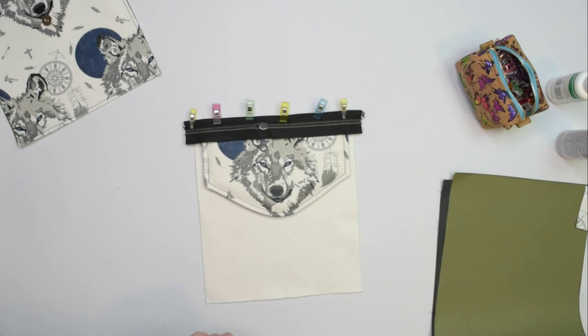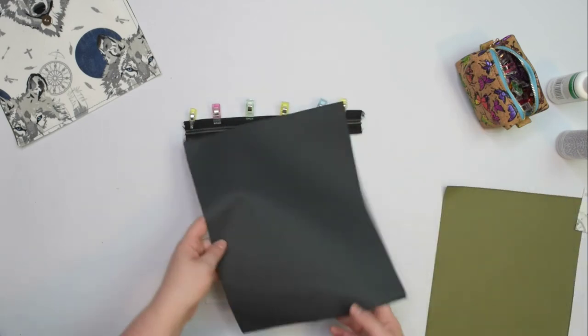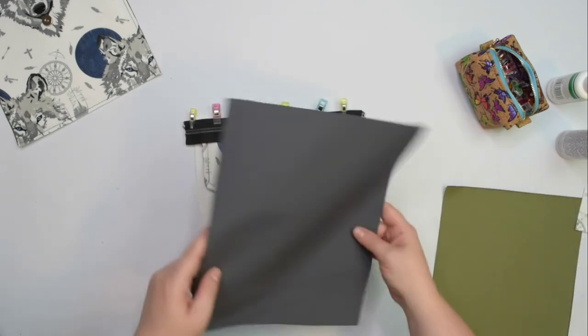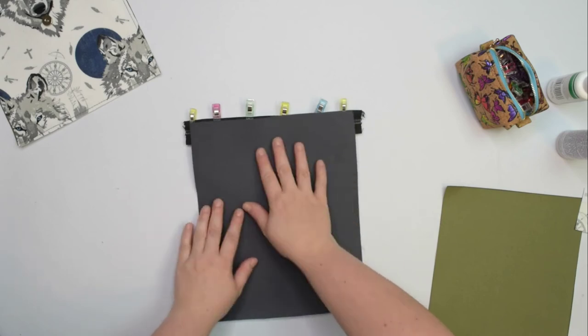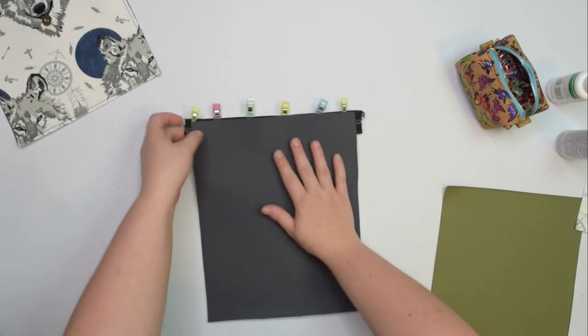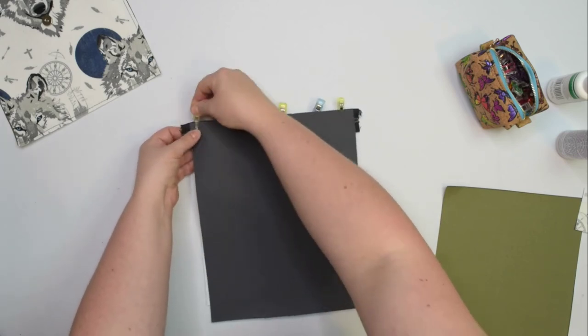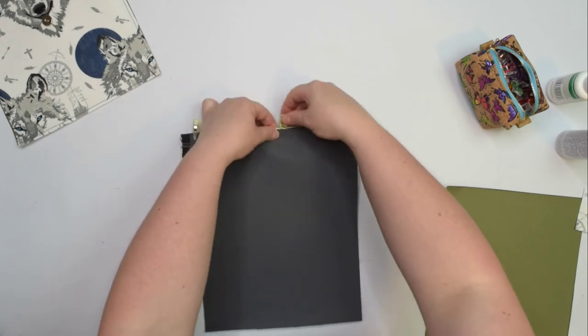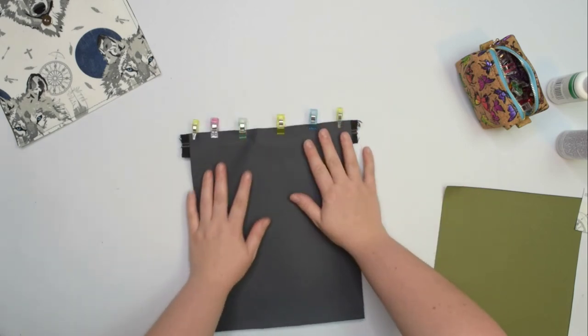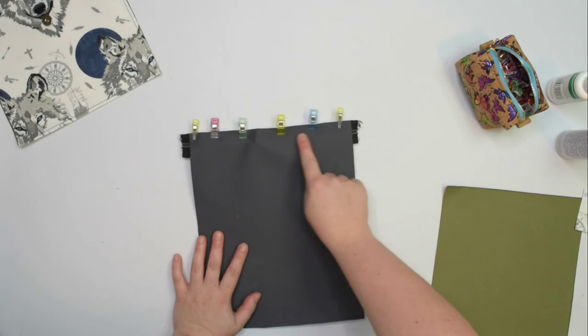Otherwise, take one external zipper pocket and with right side facing down, place it on top. Then move all the clips to hold everything together. Whenever you are ready, sew the seam using 1cm seam allowance.